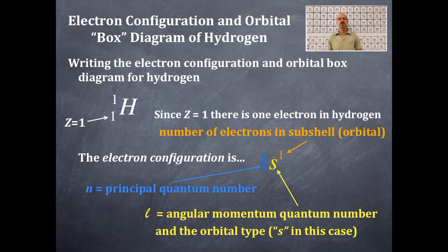And this orange here is the number of electrons in that subshell or in that orbital. So that's why it's one, because there's only one electron in hydrogen. Hopefully that works out for you.